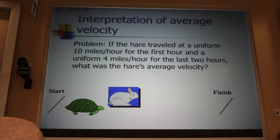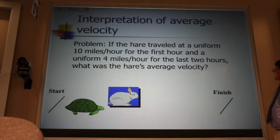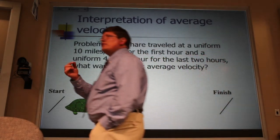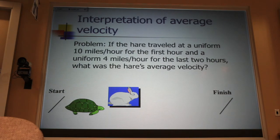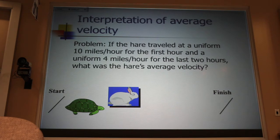Now, question. If the bunny rabbit travels at a uniform 10 miles an hour for the first hour, and a uniform 4 miles an hour for the last two hours, what was the bunny rabbit's average velocity? Now, folks, in tutorial, you're going to find that we often use student discussion. So, it would be student 1 arguing with student 2. And over the course of the semester, you're going to find out that, well, student 1 isn't right very often. Student 1 is, well, student 1. So, I'm going to play the part of student 1 right now.